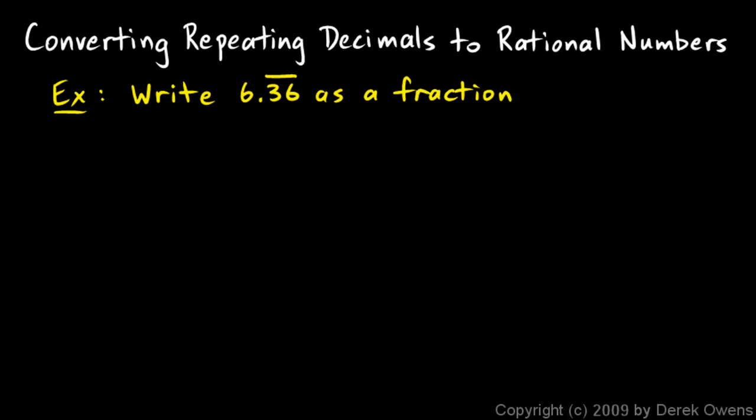We're working through some more examples of converting repeating decimals to fractions. Here's our first example: write 6.36 repeating as a fraction, where the 3 and the 6 repeat. I start off with a variable, x, and I say x is equal to 6.36 repeating.